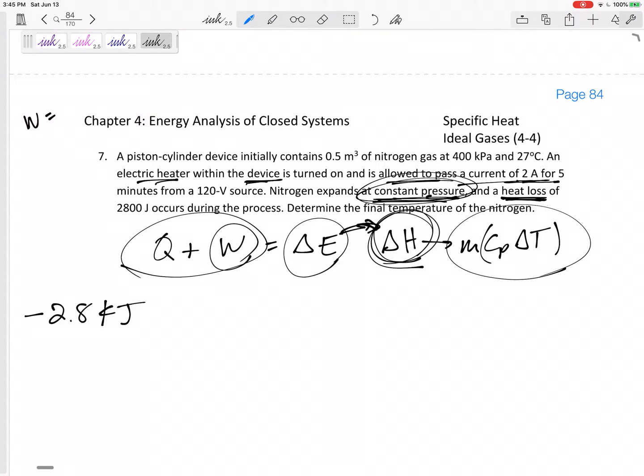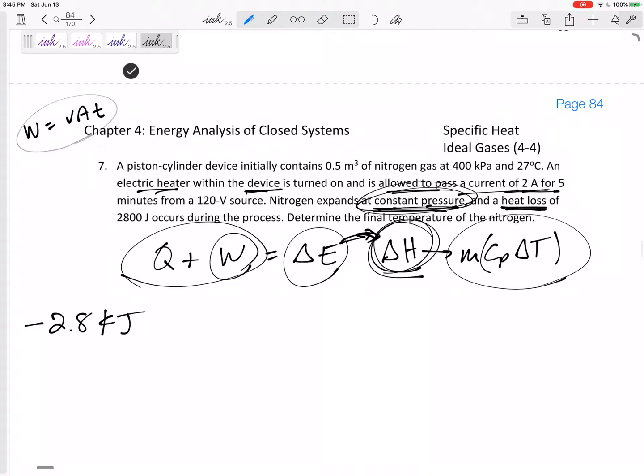I know that the work is voltage times amp times time. This would be joules if we did volt amp times seconds. First thing: it's going in, we're putting it into our system, so I've got plus the voltage 120 volts, current is 2 amps, 5 minutes. Do y'all mind if I just go ahead and put 300 seconds? Volt amp seconds - that's joules - divided by a thousand, and that is kilojoules.